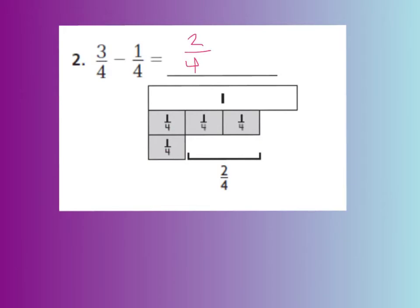Another way to check it is to keep your denominator the same and only subtract the numerator. So three minus one is two, and you leave your denominator the same — two-fourths.